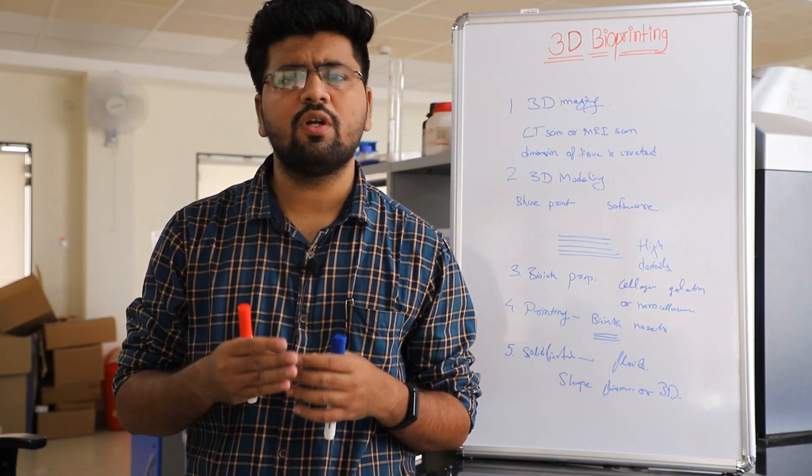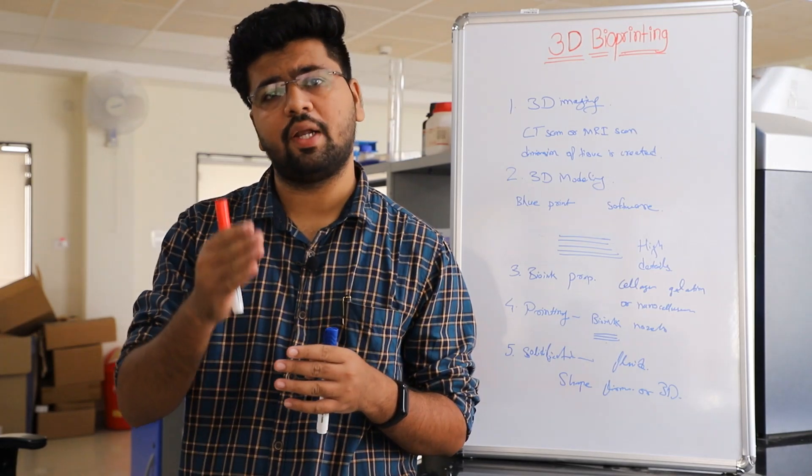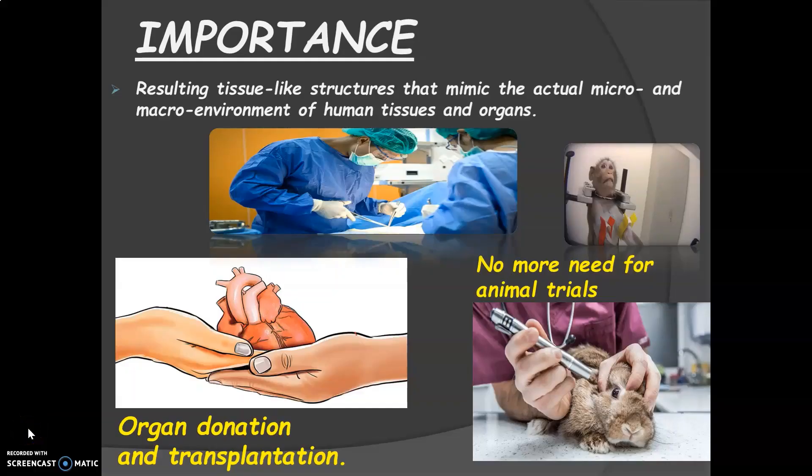Now we will see importance and applications of 3D bioprinting on slides for our better understanding. The greatest importance lies in resulting tissue-like structures that mimic the actual micro and macro environment of human tissues and organs. Second, it will reduce the need for animal trials in drug testing and clinical trials. Then 3D bioprinting could also eliminate the problems associated with organ donation and transplantation.